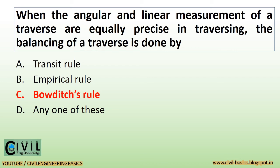When the angular and linear measurements of a traverse are equally precise in traversing, the balancing of a traverse is done by Bowditch's rule.